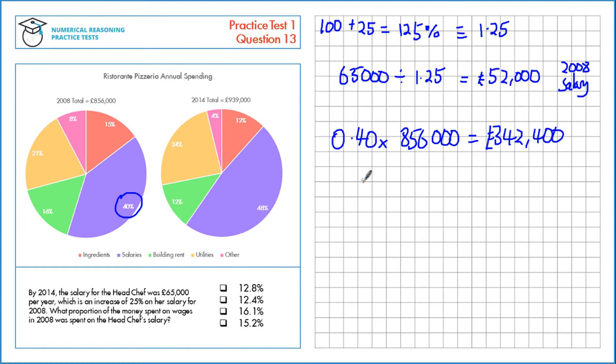Let's express her wage as a proportion of that, that's £52,000 divided by the total, £342,400, and multiply by 100 to express as a percentage, which gives us 15.2%.